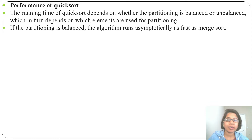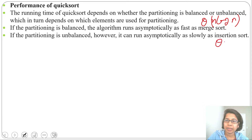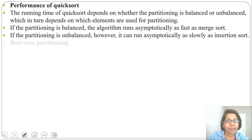If the partitioning is balanced, the algorithm runs asymptotically as fast as merge sort, meaning the running time will be θ(n log n). If it is unbalanced, it can run asymptotically as slow as insertion sort, meaning θ(n²). Insertion sort's best case is θ(n) while its worst case is θ(n²). If QuickSort is unbalanced, it is the same as the worst case of insertion sort — θ(n²). If balanced, it is θ(n log n).